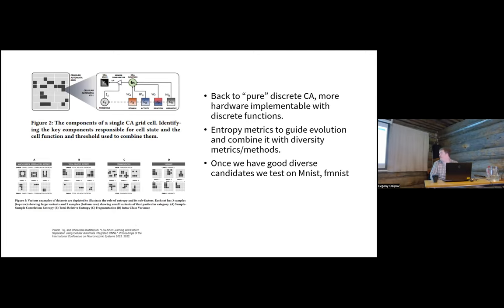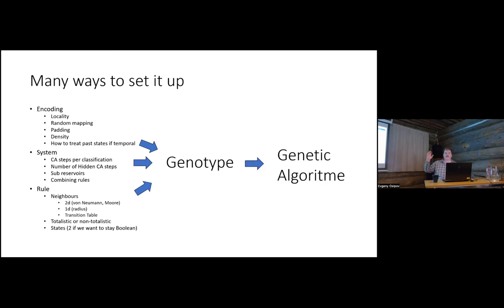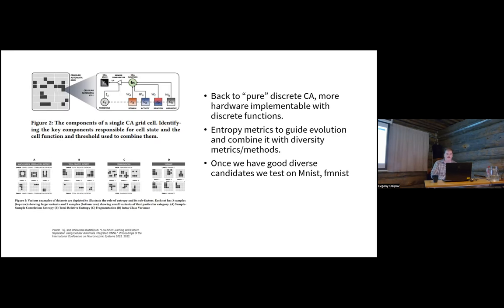Evgeny sent me a very interesting paper that does something very similar — it uses what it calls 'other automata,' a large combination of things that aren't strictly binary, but I'll stay with binary because boolean logic is the important part. I'll take some information from this paper called 'Low-Shot Learning and Pattern Separation Using Cellular Automata Integrated Convolutional Neural Networks.' It identifies a key problem: testing all these configurations on a non-trivial benchmark is computationally intensive.